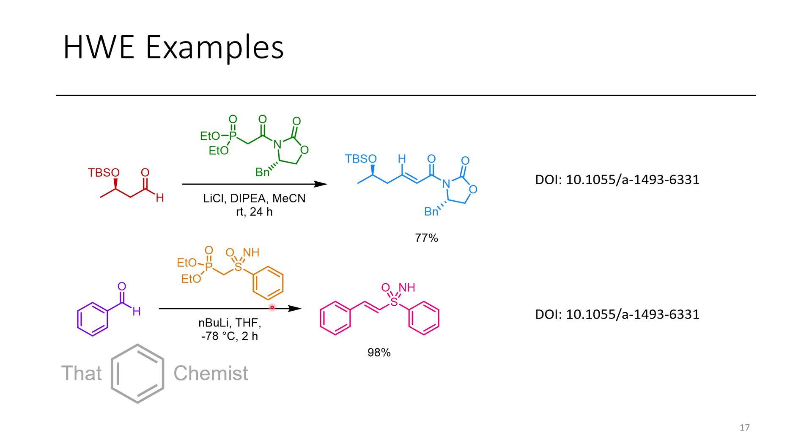Now, in this next case, as our electron-withdrawing group, we have a sulfoximine, which is like a sulfone, except one of the S double bond O's is replaced with an NH. These are an emerging motif in medicinal chemistry. And here we can see that we have an alpha-beta unsaturated sulfone formed as the product.